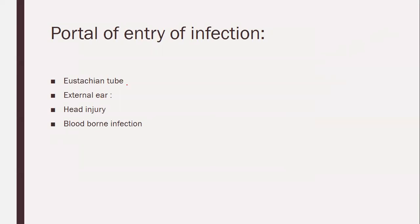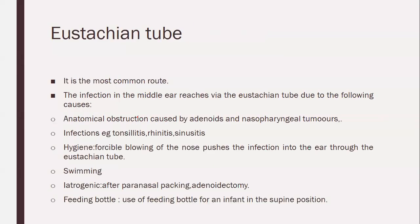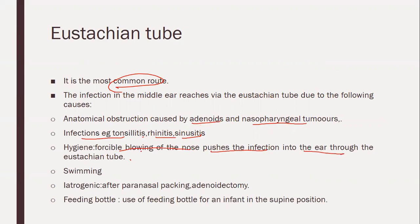Portal of entry of infection: How these infections enter the middle ear — either through the Eustachian tube, external ear, head injury, or bloodborne infection. Eustachian tube is the most common route. Infections in the middle ear reach via the Eustachian tube through: anatomical obstruction caused by adenoids and nasopharyngeal tumors; infections such as tonsillitis, rhinitis, and sinusitis; and forcible blowing of the nose, which pushes infection into the ear through the Eustachian tube.